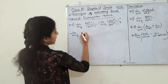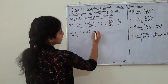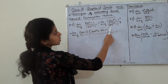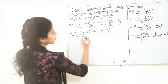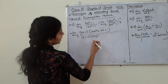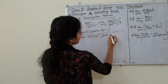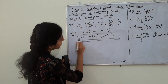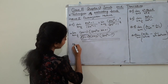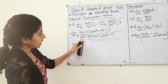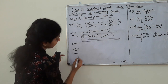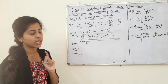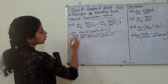We apply a³ - b³ = (a - b)(a² + ab + b²) to the numerator, and a⁴ - b⁴ to the denominator. When we put x = 1/2, the factor (2x - 1) gives 2×(1/2) - 1 = 0 in the denominator, confirming it. So we cancel the (2x - 1) factor from numerator and denominator.